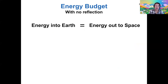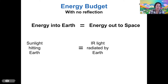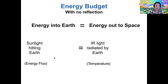This is what our energy budget looks like if I write down that equation. Considering first the case where Earth has no reflection on its surface: if we count up all the energy in all the light hitting Earth from the sun, that has to be exactly equal to the amount of light radiated by Earth. These factors have specific scientific names — the sunlight hitting Earth is called energy flux, which we talked about last time — and the light radiated by Earth is governed by the temperature of our surface.